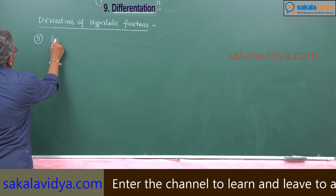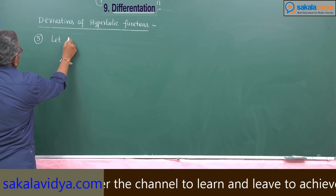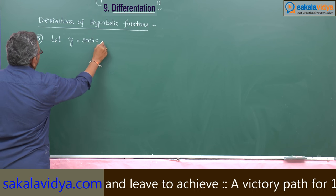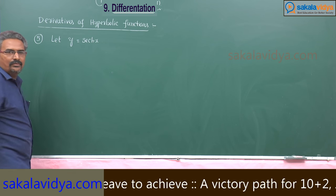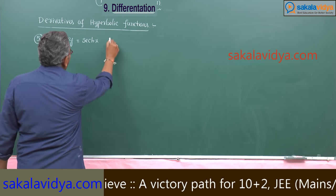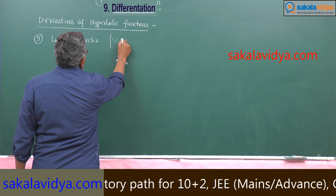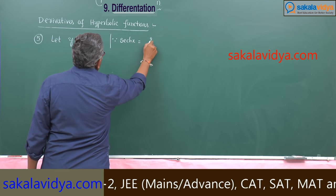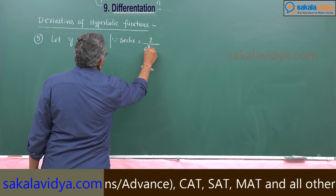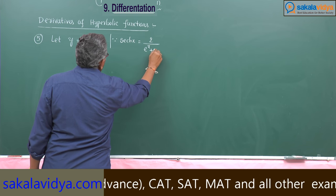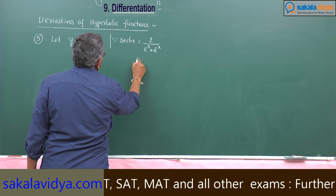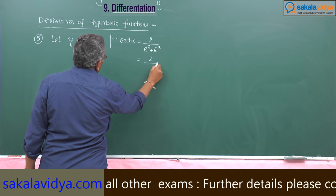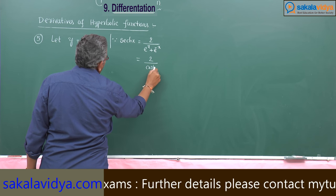Let y be equal to secant hx from hyperbolic functions. Secant hx is equal to 2 divided by e to the power x plus e to the power minus x, which is the reciprocal of cosh. So this is 2 by cosh x.